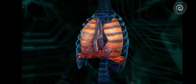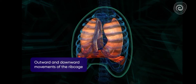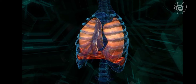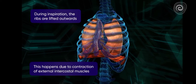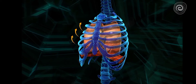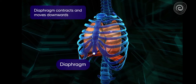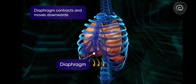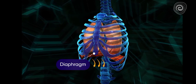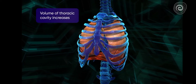In human beings, breathing is affected by the outward and the downward movements of the ribcage. During inspiration, the ribs move and are lifted outwards. Simultaneously, the diaphragm muscles contract, pulling down the diaphragm.